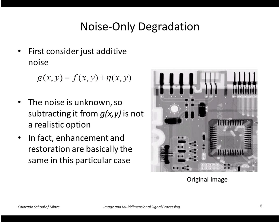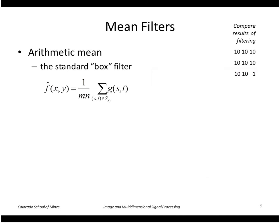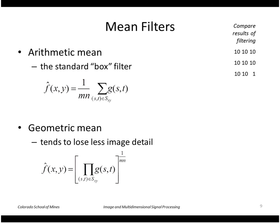Let's first look at degradation due to noise only, setting aside the convolution with h for now. Since noise is unknown we can't just subtract it from g, but we can apply filters. The arithmetic mean filter is just the standard box filter — we average all pixels in a neighborhood to reduce the magnitude of the noise. A variant is the geometric mean filter: instead of adding values we multiply them and take the nth root, which tends to lose less image detail.